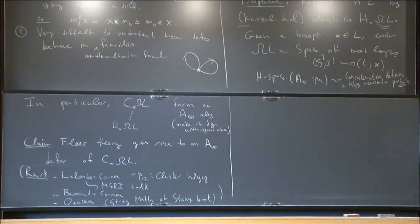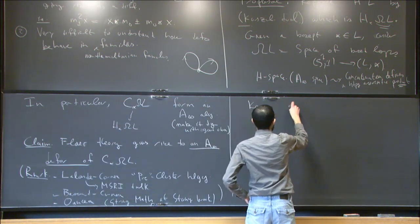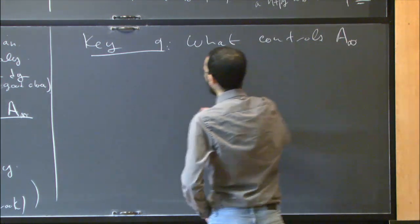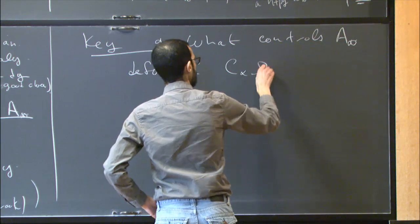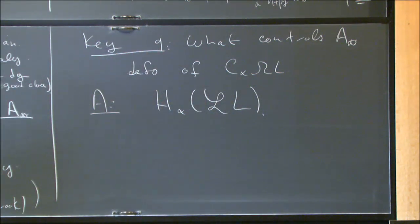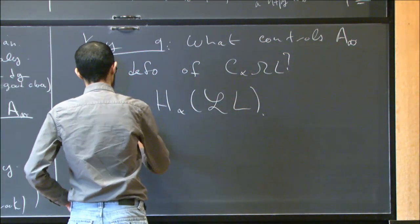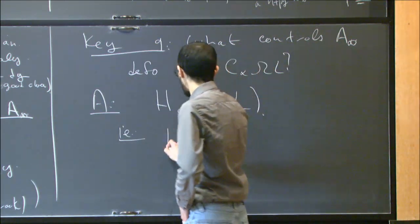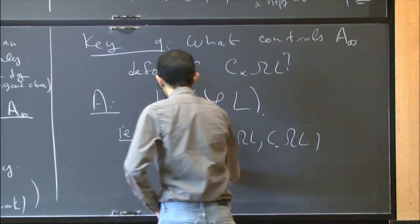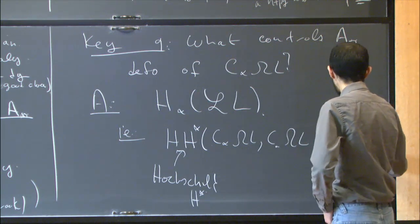When you have a framework like this, the key question is: what controls the A-infinity deformations of this algebra? The answer is fairly simple: it is the homology of the free loop space of L. The deformation theory of an algebra is controlled by its Hochschild cohomology, and the Hochschild cohomology of chains on ΩL is isomorphic to the homology of the free loop space.